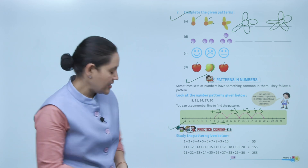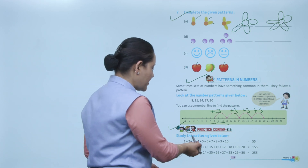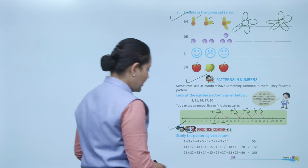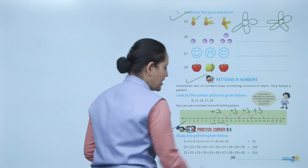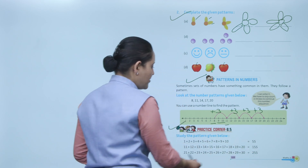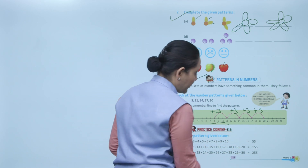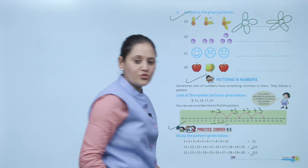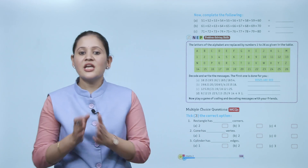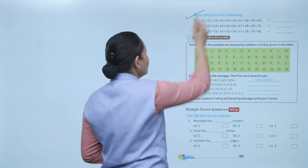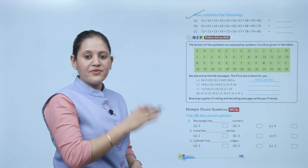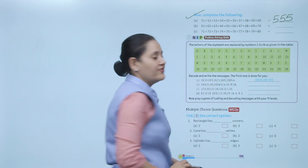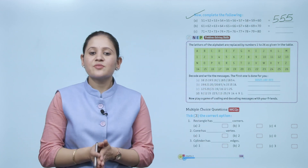Practice corner 8.5: study the pattern given. Here 1+2+3+4+5+...+10 equals 55. Then 11 to 20 gives 155. Then 21 to 30 gives 255. Now complete the following: adding 1 to 50 will give 555.